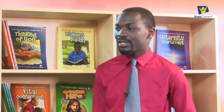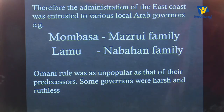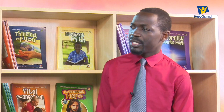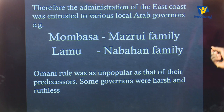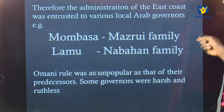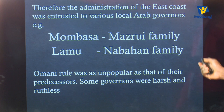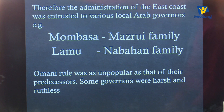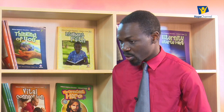Therefore, the administration of East Africa was entrusted to various local Arab governors. Because of those reasons, he was not able to carry out the administration directly. For example, in Mombasa there was the Mazrui family acting as governor, and in Lamu there was the Nabahani family. Omani rule was unpopular like that of their predecessors, the Portuguese. Some governors were harsh and ruthless — the same qualities that made the Portuguese unpopular.